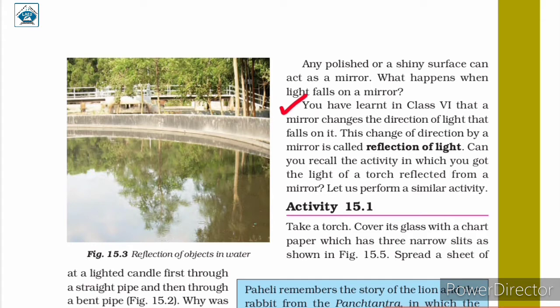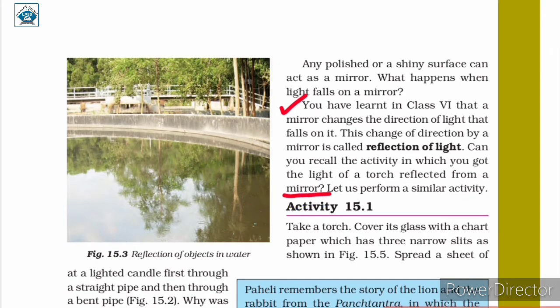You have learned in class 6 that a mirror changes the direction of light that falls on it. This change of direction by a mirror is called reflection of light. Can you recall the activity in which you got the light of a torch reflected from a mirror? Let us perform a similar activity.